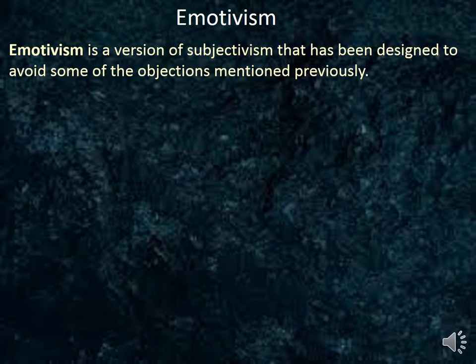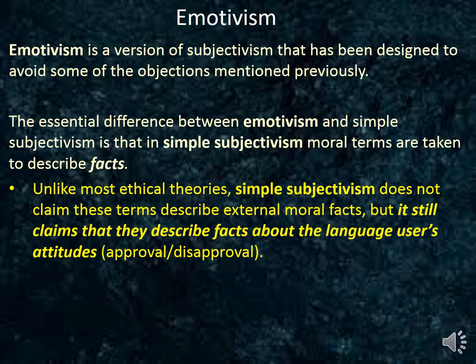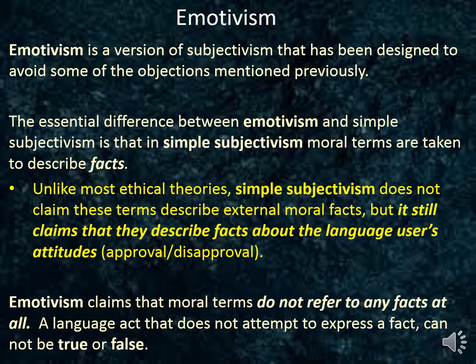Emotivism is a version of subjectivism designed to avoid some of the objections mentioned previously. The essential difference between emotivism and simple subjectivism is that in simple subjectivism, moral claims are taken to describe facts. Unlike most ethical theories, simple subjectivism does not claim to describe external moral facts, but it still claims to describe facts about the language user's attitudes — that is to say, approval or disapproval. Emotivism, on the other hand, claims that moral terms do not refer to any facts at all. This is how emotivism is different from simple subjectivism.